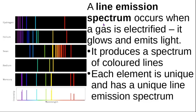To make a line emission spectrum, you get a gas — usually the gas of a single element like hydrogen, helium, neon, sodium, or mercury. You fill a little tube with the gas of an element, put a lot of energy into it, and the gas is electrified. It will glow and emit light, but it will not emit light of a continuous spectrum. It will produce light of certain specific colored lines. Every element is unique and has a unique line emission spectrum.